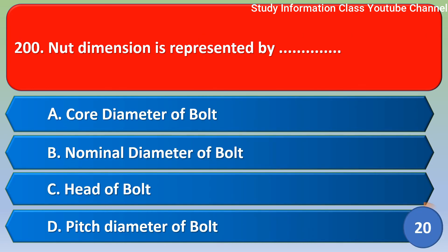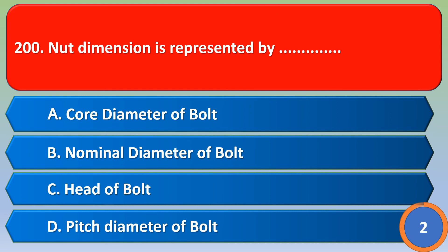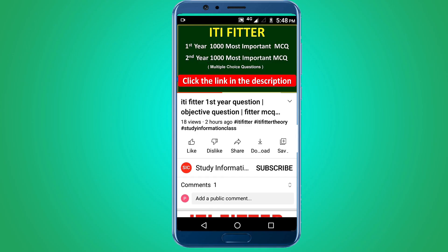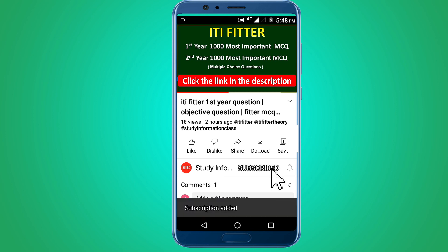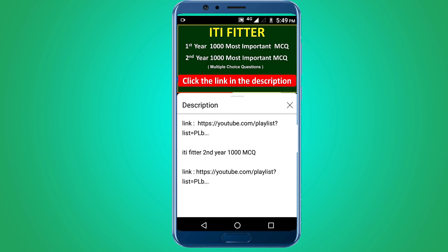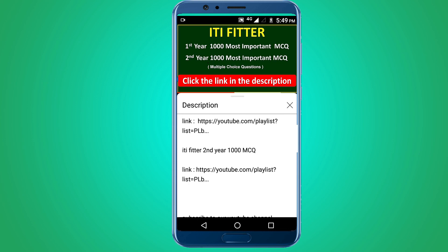Next question. Nut dimension is represented by: Option A, core diameter of bolt; Option B, nominal diameter of bolt; Option C, head of bolt; Option D, pitch diameter of bolt. The correct answer is Option B, nominal diameter of bolt. For complete ITI Fitter first year and second year thousand most important MCQs, subscribe this channel and click the link in the description. Thank you for watching.